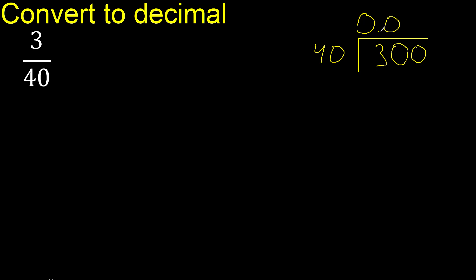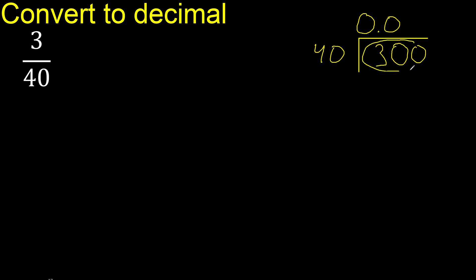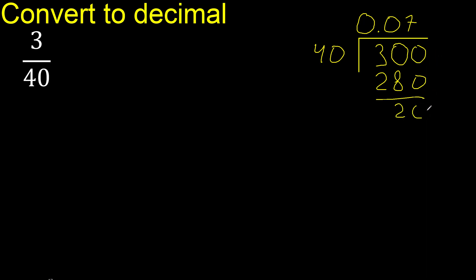300 is not less than 40, therefore divide. 40 multiplied by what number is nearest to 300? Multiplied by 8 is 320 — excessive. Multiplied by 7 is 280 — the nearest number. Subtract: 300 minus 280 is 20.